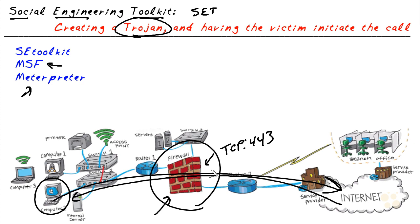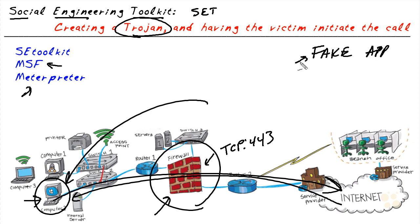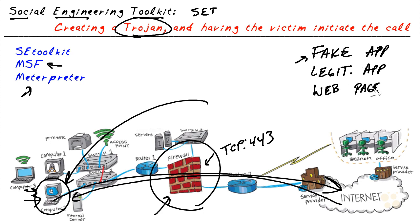The firewall may just see that as normal return traffic coming back to the user. As for getting this malware — this Trojan — installed, we have lots of options. We could have a fake application that doesn't do what it claims but instead installs the malicious software, or a legitimate application used as a wrapper around the malware. When the user installs the legitimate application, the malware also gets installed. We could also have a user visit a webpage where a warning pops up saying 'you've got a virus, click here to fix it,' and clicking it installs the Trojan, while the website gives the appearance of scanning and cleaning the computer.